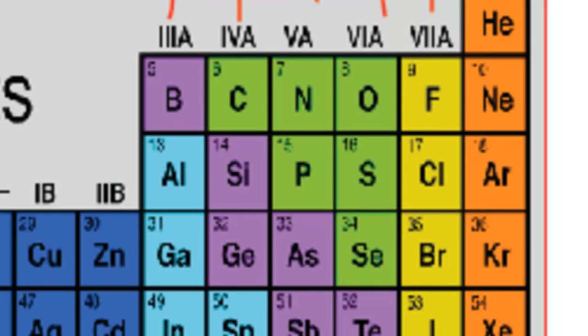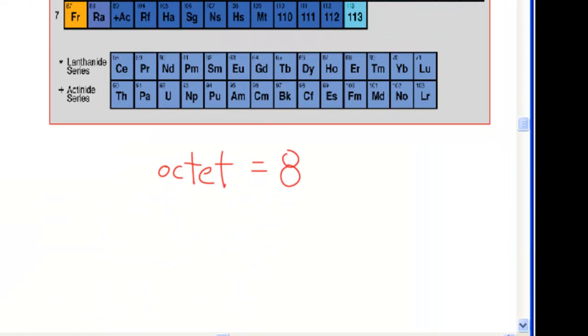Let's try an example with nitrogen. Nitrogen is in group five. That's five valence electrons, right? One, two, three, four, five. Well, why did I draw it this way?